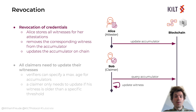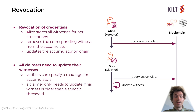After a revocation, Bob also needs to update his credential. New versions of accumulators could be added to the chain quite frequently, and the worst case would be that Bob needs to update his credential before every verification. To prevent this, a verifier can signal the claimer that they accept not only the newest accumulator, but also accumulators which are more recent than a specified point in time during the initiation of the verification process. The claimer only needs to update their credential if it has not been updated after the required timestamp.